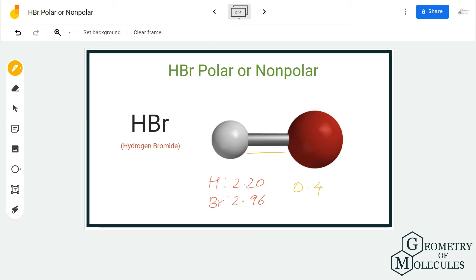As a result, it will acquire partial negative charges, so the region around bromine atom will have partial negative charges. The region around hydrogen will have partial positive charges, and these are the poles formed in this molecule.